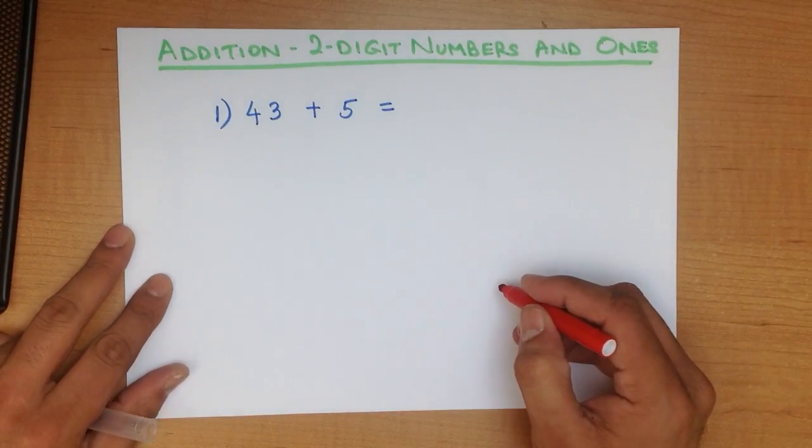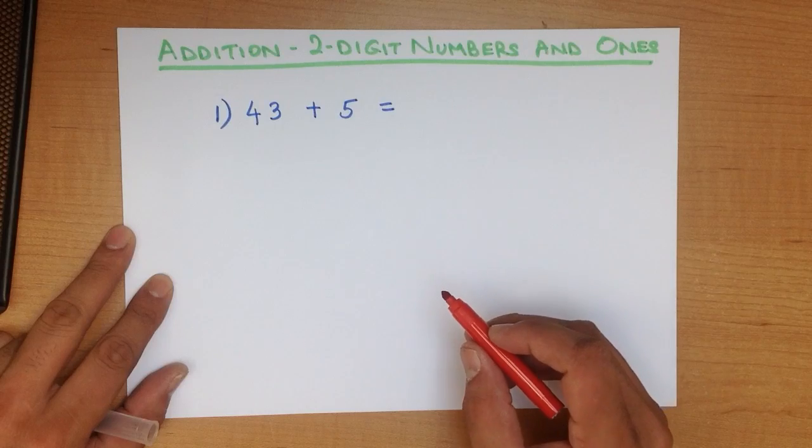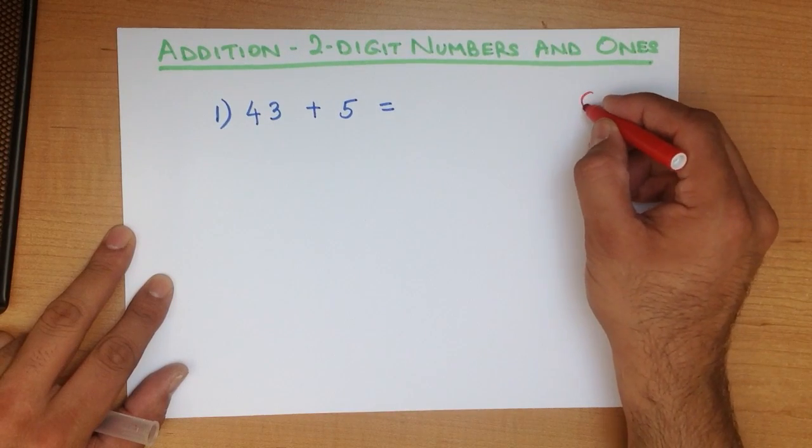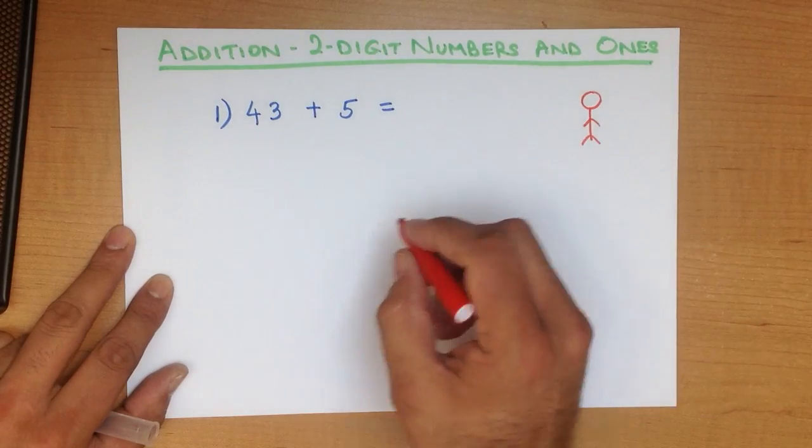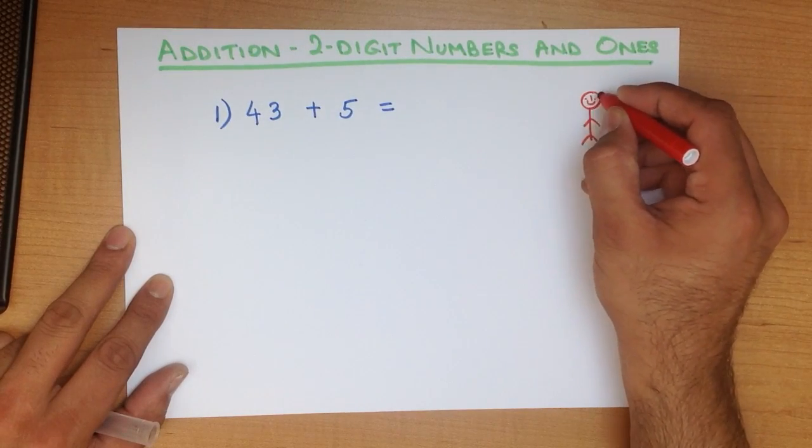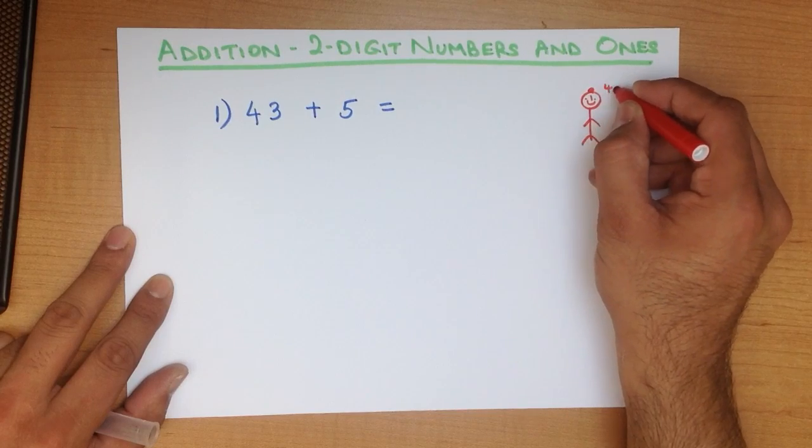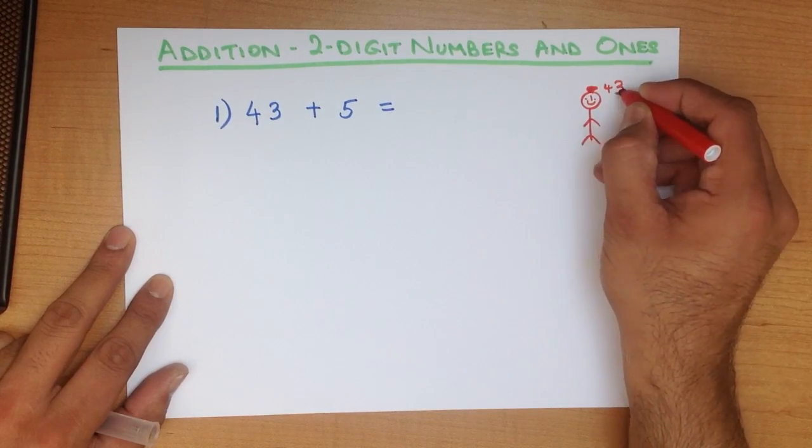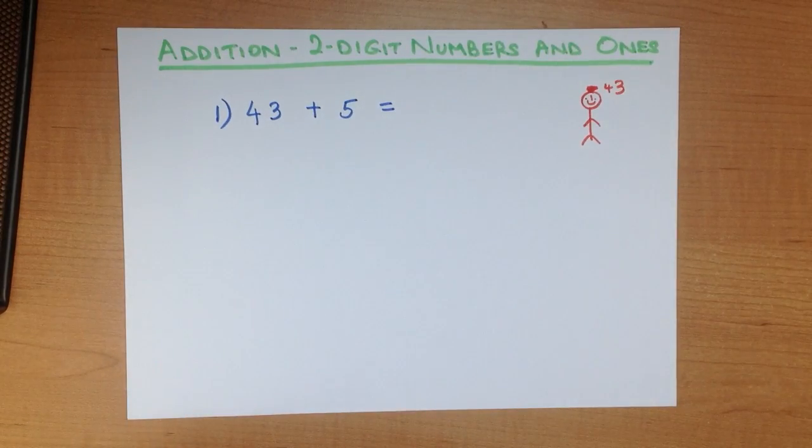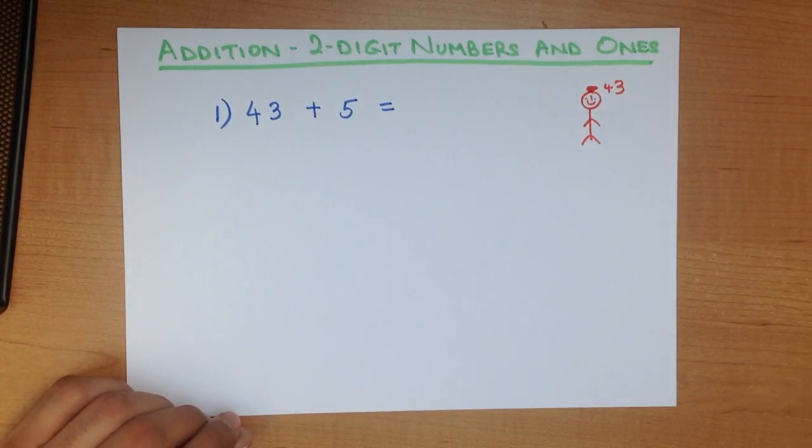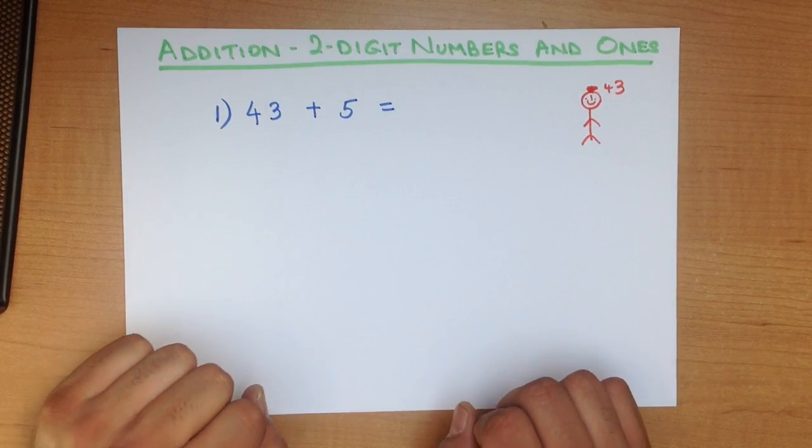Do you recall how we do the head and fingers method? What we do is we say the larger number, 43, that's me, 43 is on my head. The smaller number, we count on our fingers. So how many do we need? We need 5.